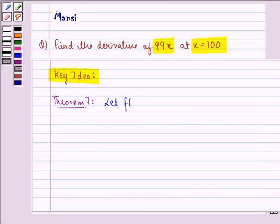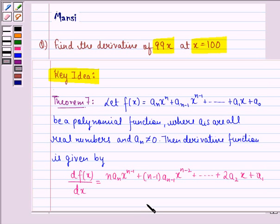Before starting with the solution, let us see the key idea behind the question, that is Theorem 7 of your book. It says that let f(x) be equal to a_n x raised to the power n plus a_(n-1)